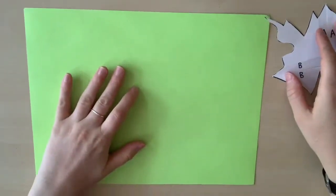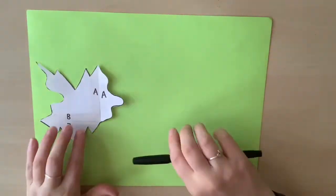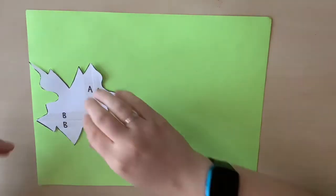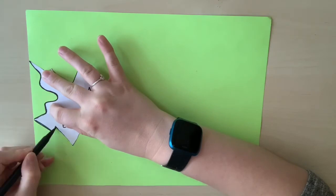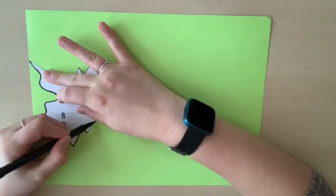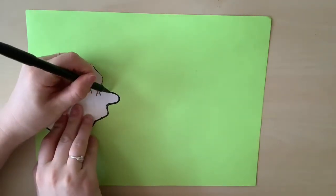Now it's time to get drawing. I'm going to take that shape and just place it anywhere on the paper. And I'm going to trace all around it. I'm making sure that I leave my shape in the same spot. It doesn't move while I trace all around it.